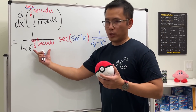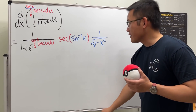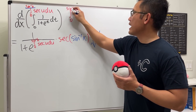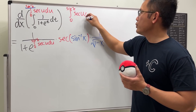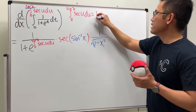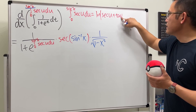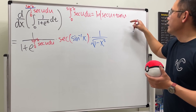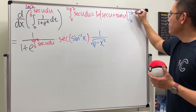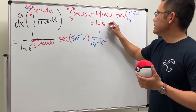Let's just go ahead and work this out and you will see why I picked e to some power. So let's do that on the side here. If we look at the integral going from zero to inverse sine x of secant u du — the integral of secant, by the standard result, is ln of the absolute value of secant u plus tangent u. Then we have to plug in the bounds.